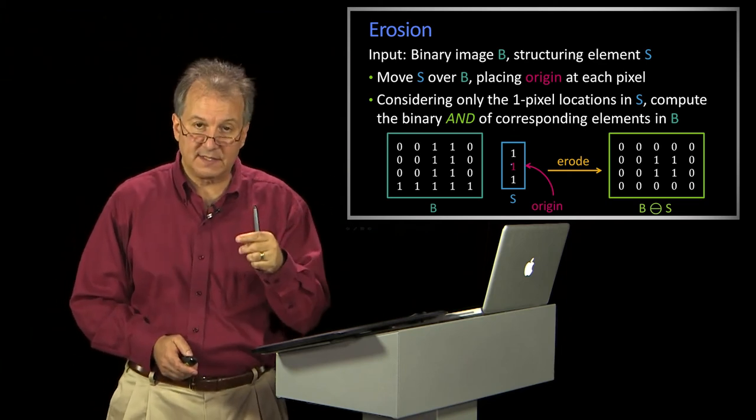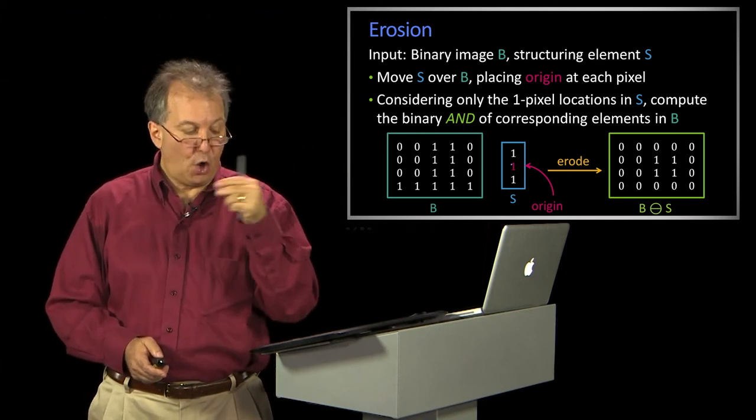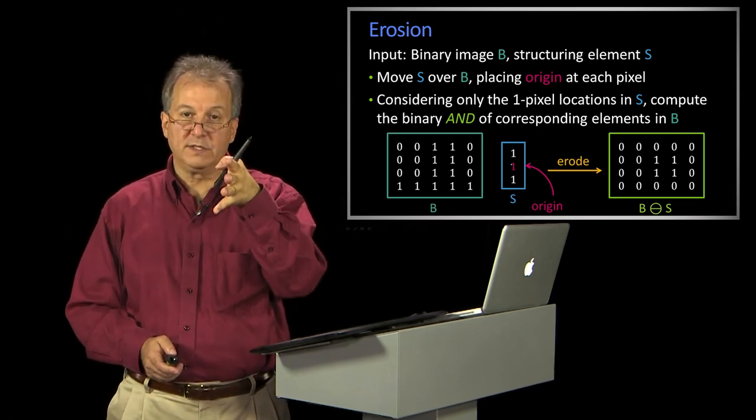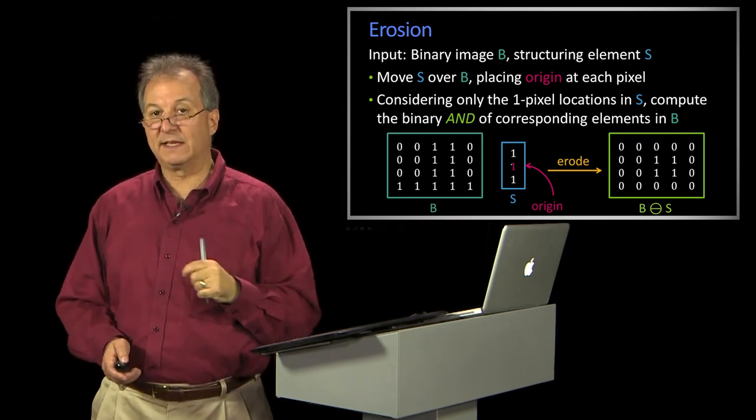Well, that means that all of them have to be a one for it to be a one. So another way of saying this is, when I put my structuring element down, all of its ones better touch ones in the underlying image, or I'm going to set the value to zero.